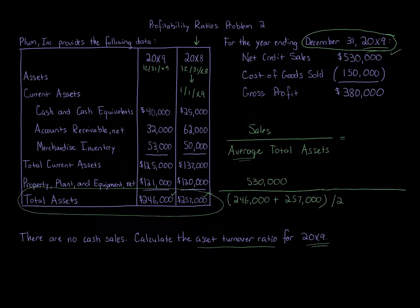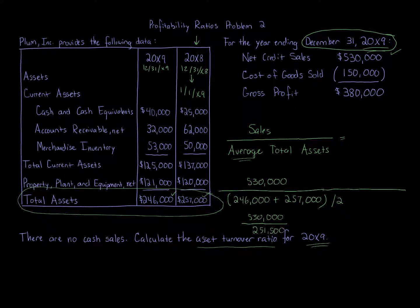So when we do this calculation: $530,000 (our numerator, net credit sales) divided by $251,500 (average total assets) equals 2.11. The asset turnover ratio is 2.11 times.